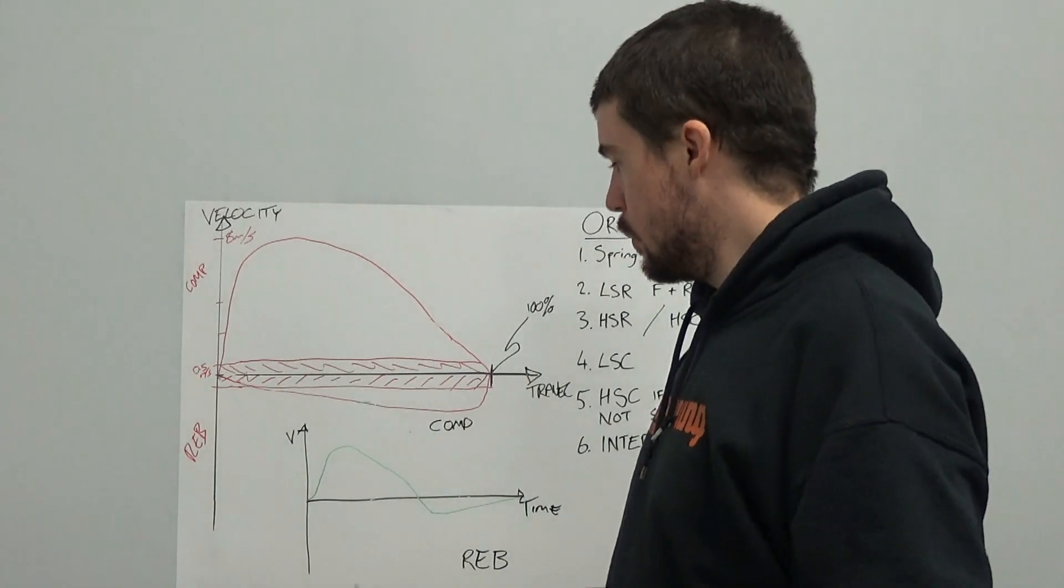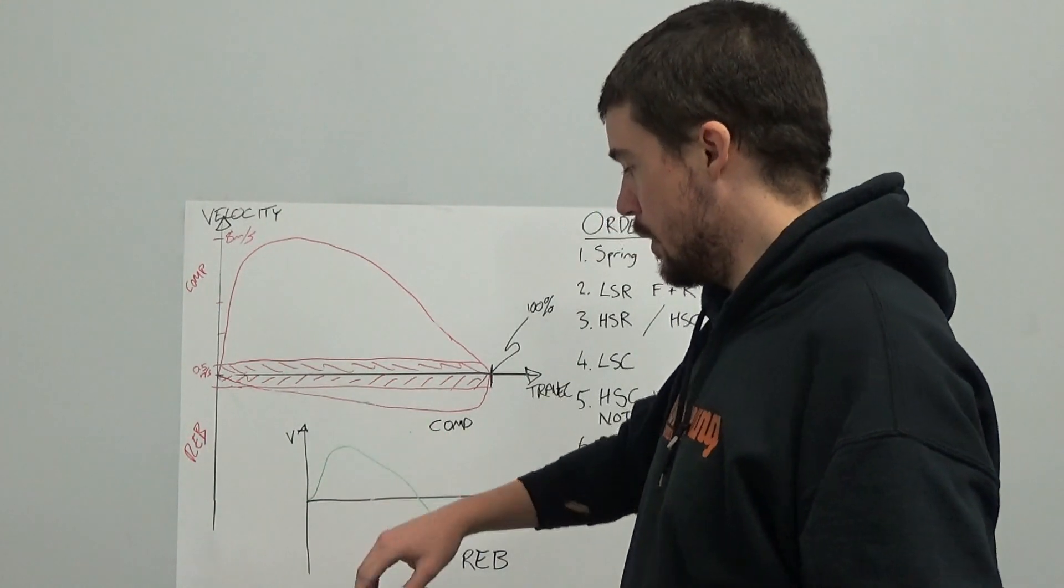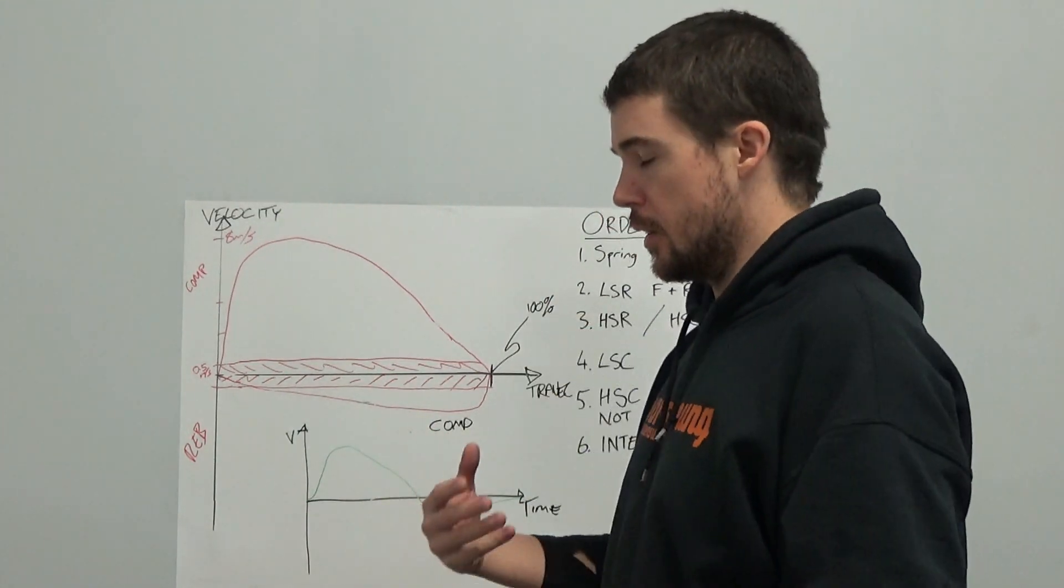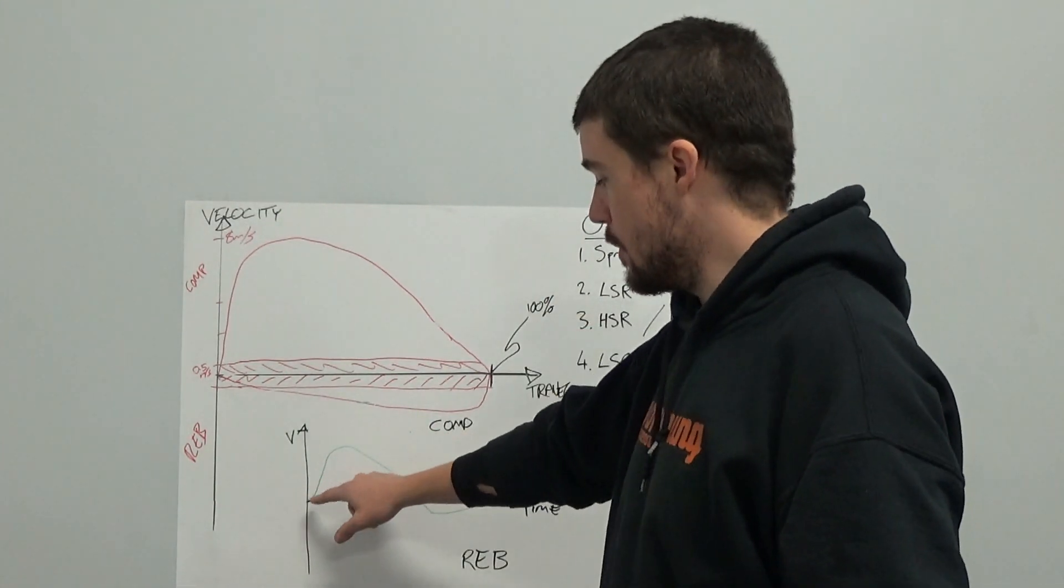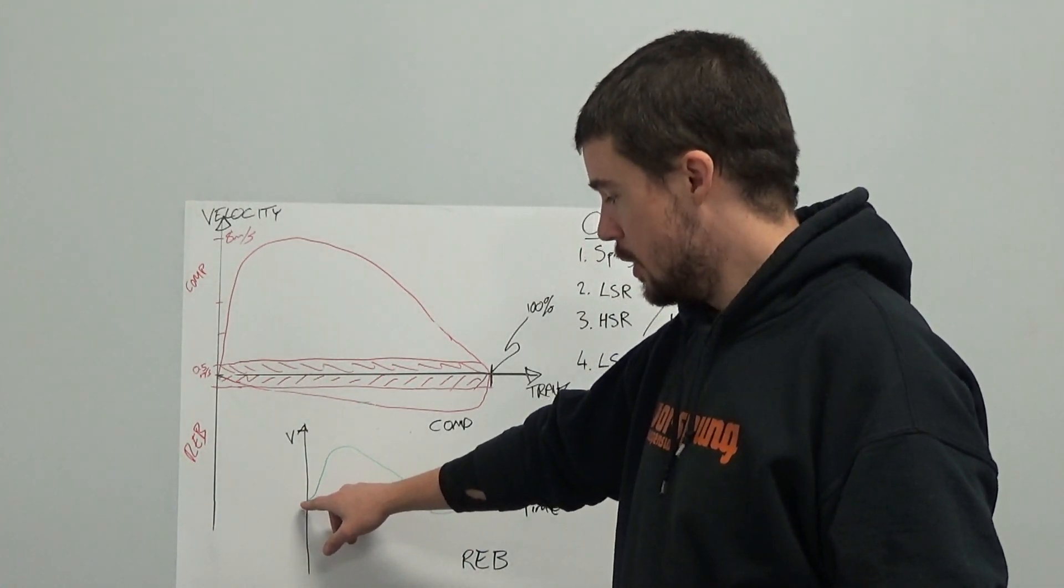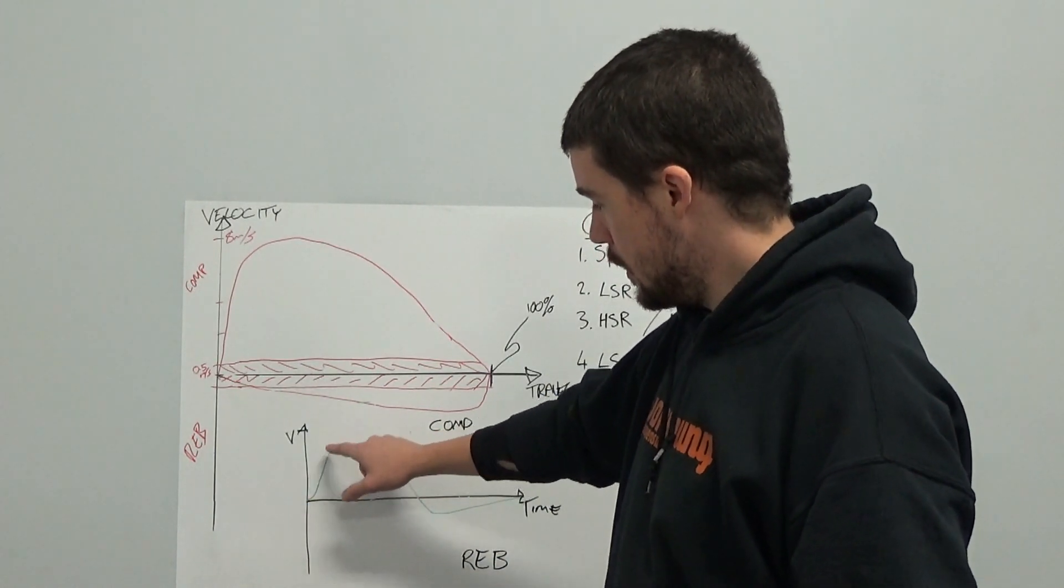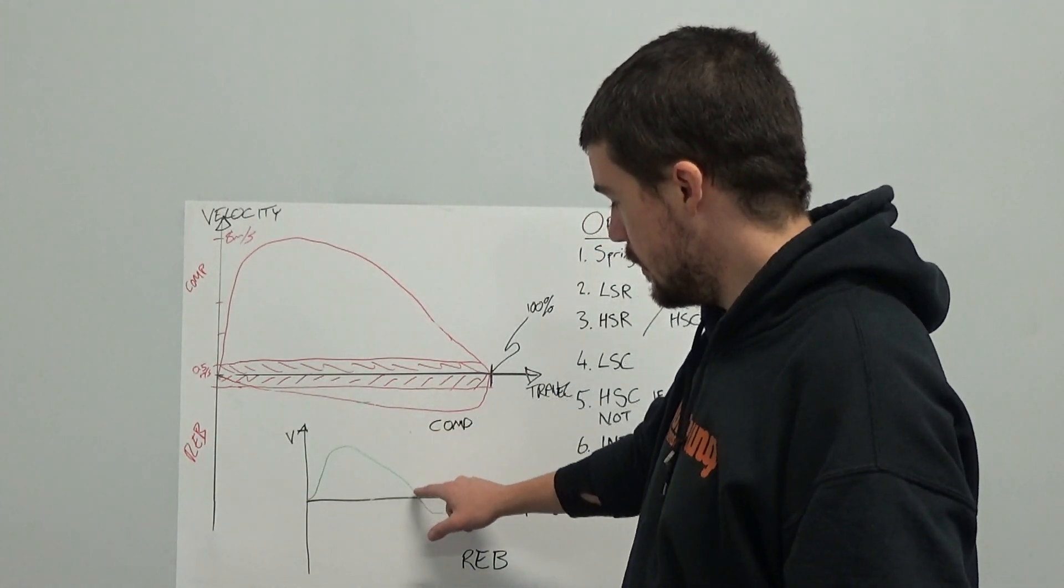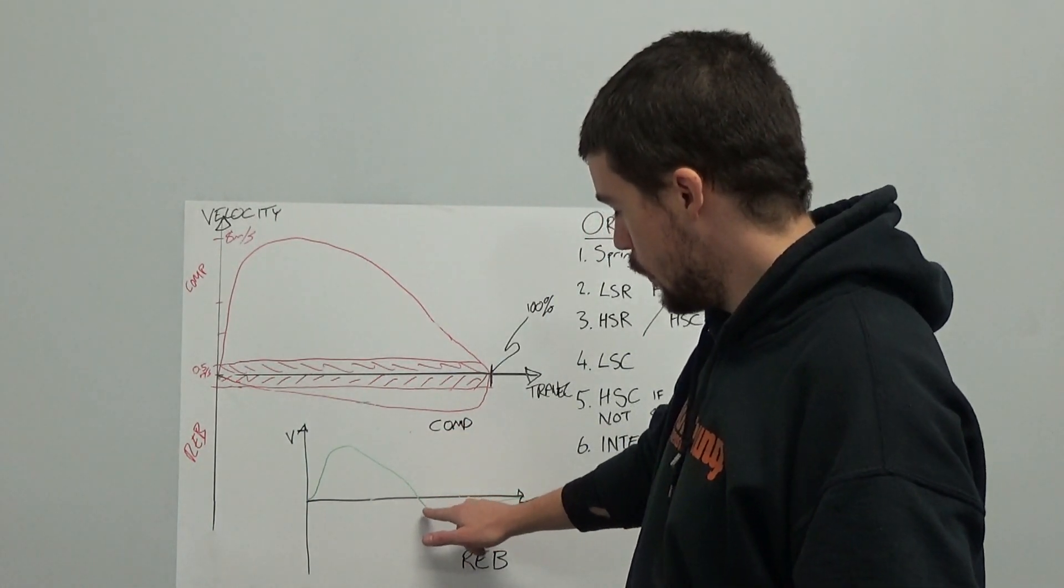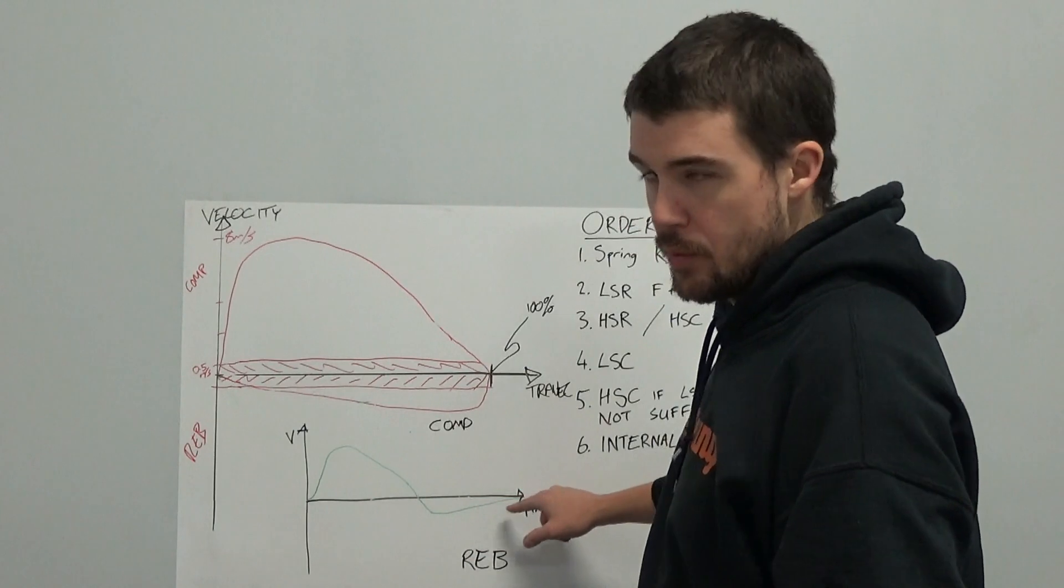So the low speed adjuster is proportionally much more effective in rebound than it is in compression. So what we'll see with velocity versus time profile of single impact that compresses the suspension and then allows it to rebound is something that starts at zero velocity, static position, whether that's fully topped out or whatever. Accelerates up, reaches a certain speed, decelerates, goes into the negative, which is rebound, reaches a certain peak speed, and then decelerates in rebound from there.